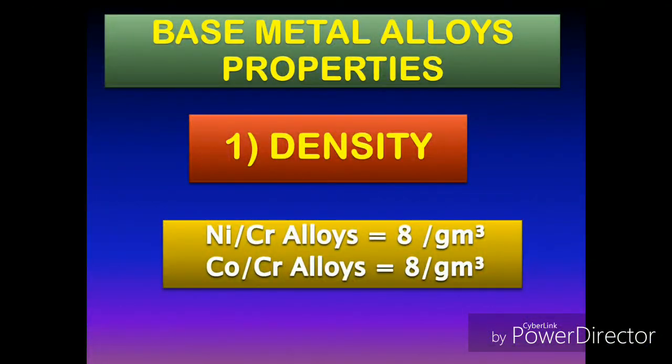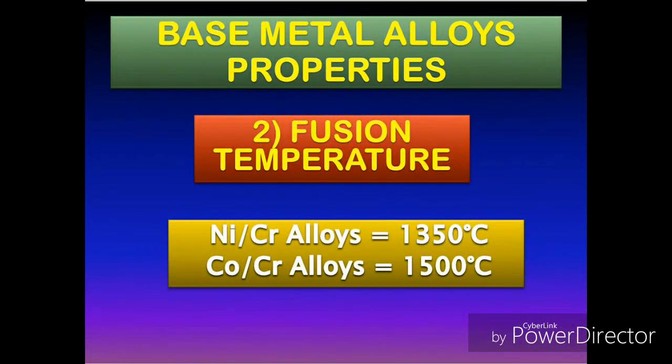Now let's compare a few properties of these two base metal casting alloys. First is density — the density of both nickel-chromium and cobalt-chromium casting alloys is the same, meaning they are equal in weight. Secondly, the fusion temperature of nickel-chromium casting alloy is as high as 1350 degrees centigrade, whereas the fusion temperature of cobalt-chromium casting alloy is as high as 1500 degrees centigrade.